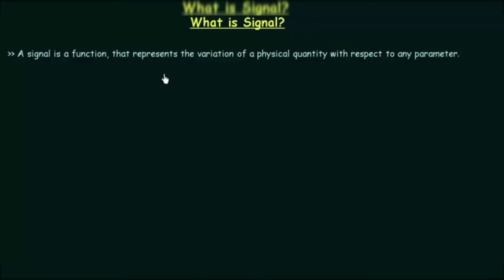We will first see what is a signal, then we will see what is an analog signal, a discrete time signal, and then we will see what is a digital signal, so that we can start our digital electronics course.